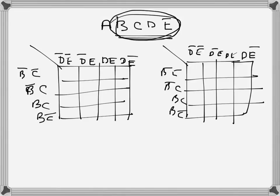The difference between the two Kmaps is that the first Kmap is for ā (a-bar), and the second one is for a. This is how we handle a five-variable Kmap.